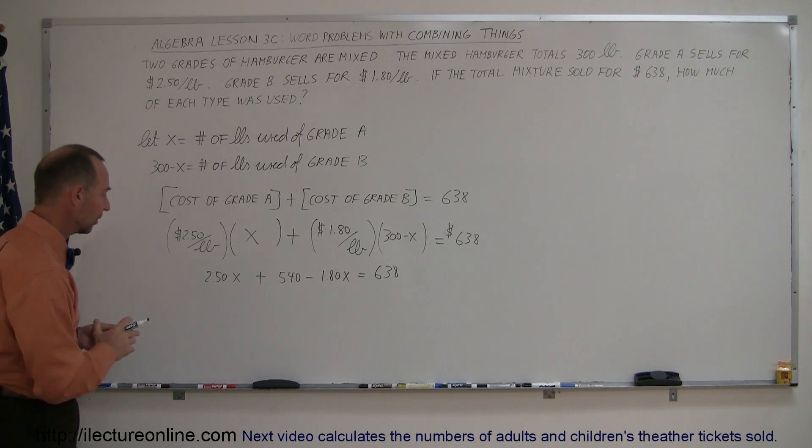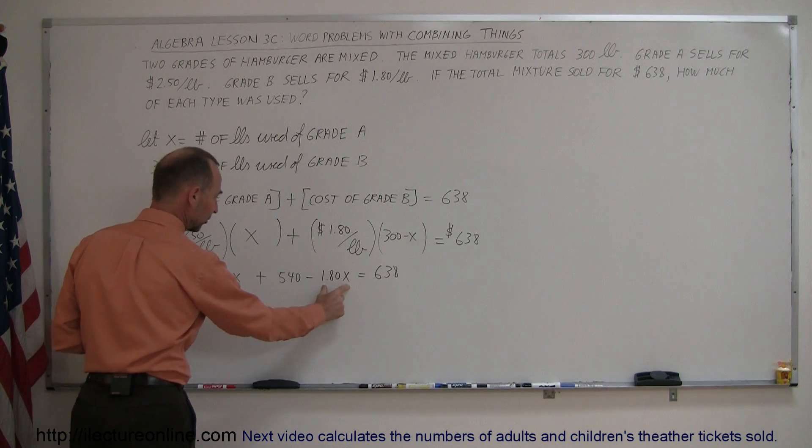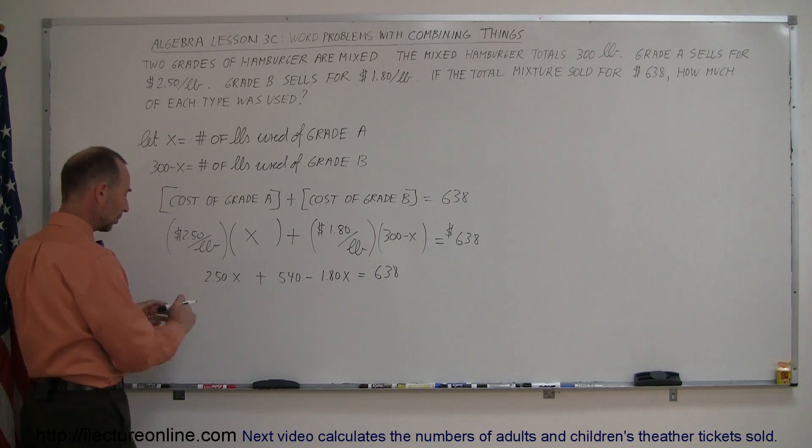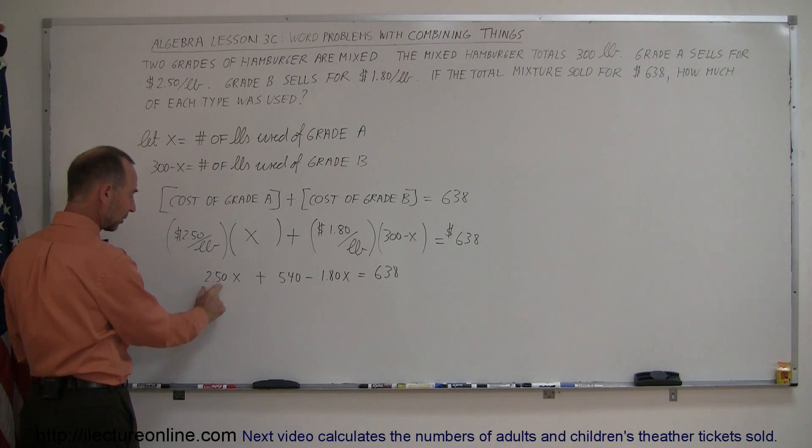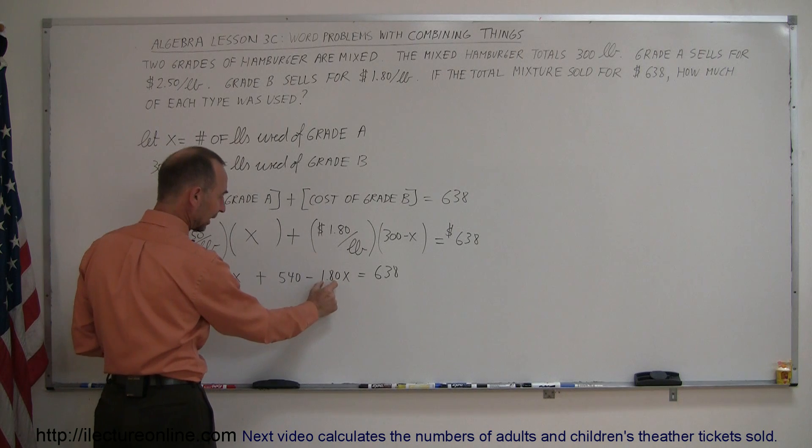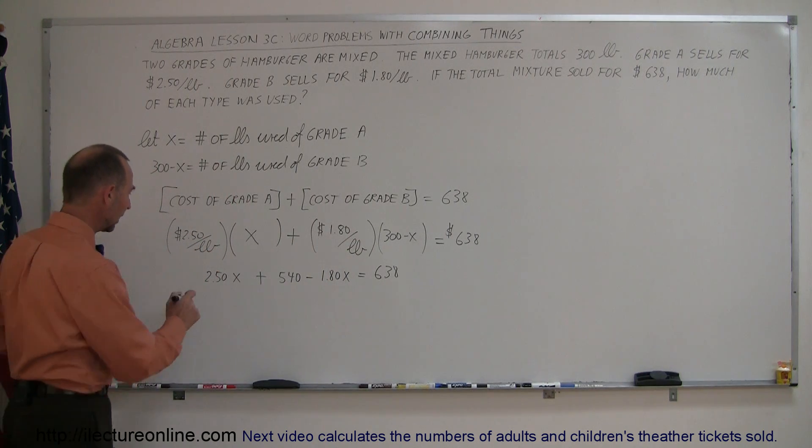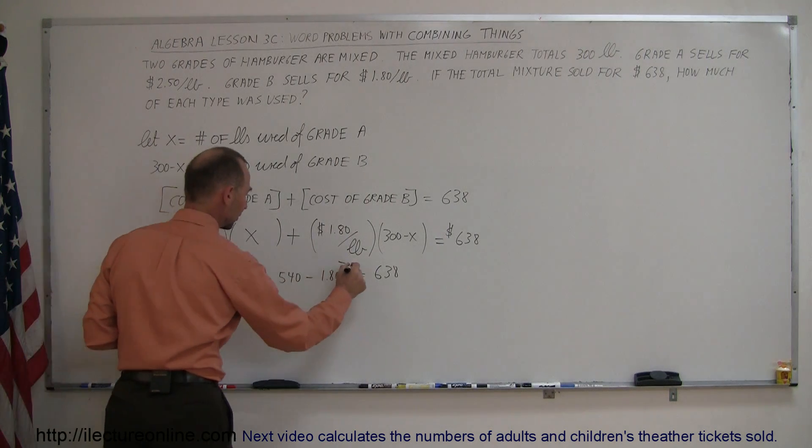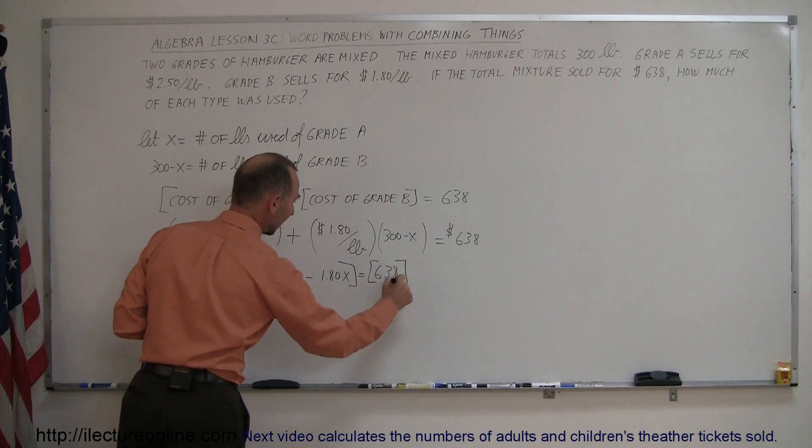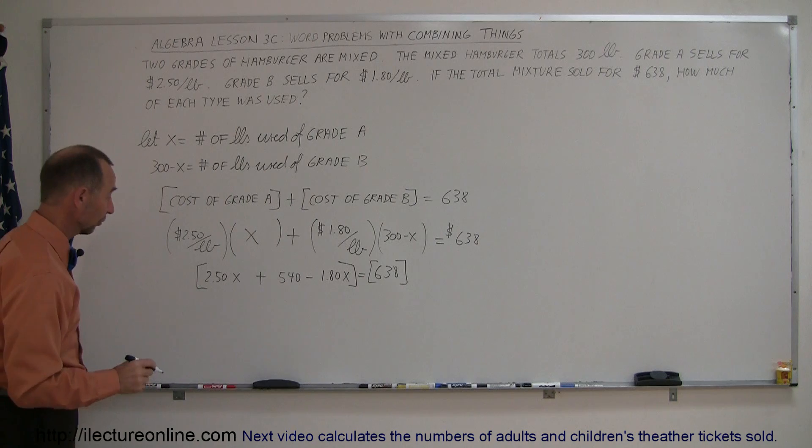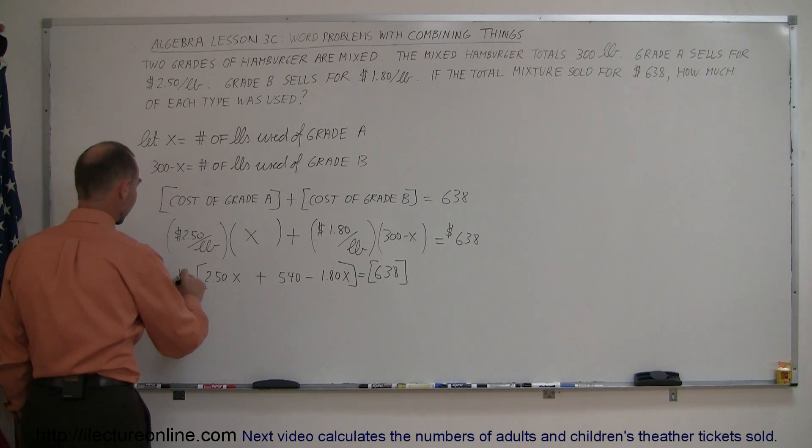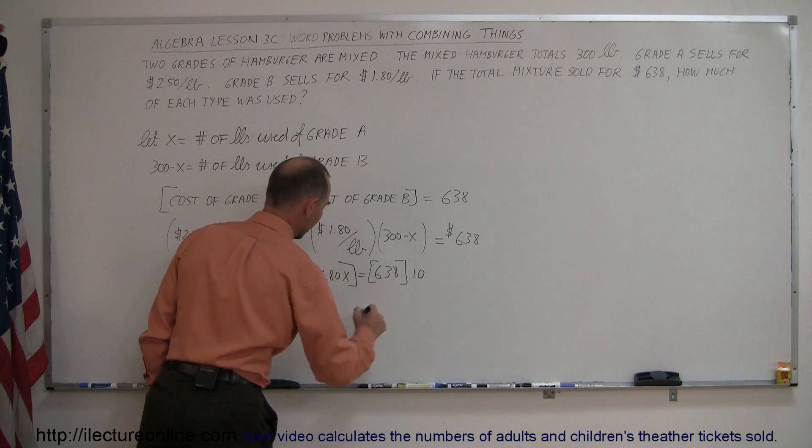Now notice that we have a decimal here, we have a decimal here. To get rid of the decimal place, we have to multiply everything by 10. If I multiply this by 10, I get 25. If I multiply this by 10, I get 18. So I can go ahead and multiply both sides of the equation by 10, and I do that to get rid of the decimal first. So multiply this times 10, multiply this times 10, what do we get?